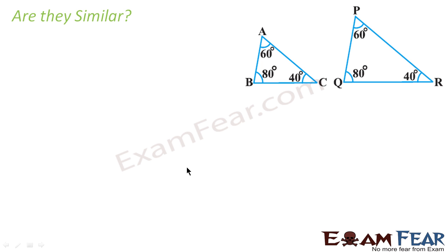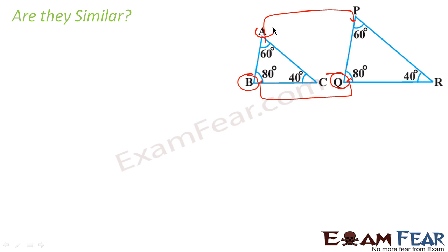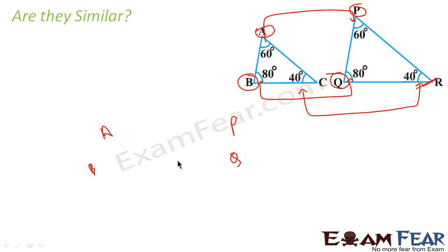The next question asks: are these triangles similar? If you see here, angle B is equal to angle Q — same. Angle A is equal to angle P — same. Also angle C is equal to angle R — same. So since A equals P, B equals Q, and C equals R, I can write that triangle ABC is similar to triangle PQR.